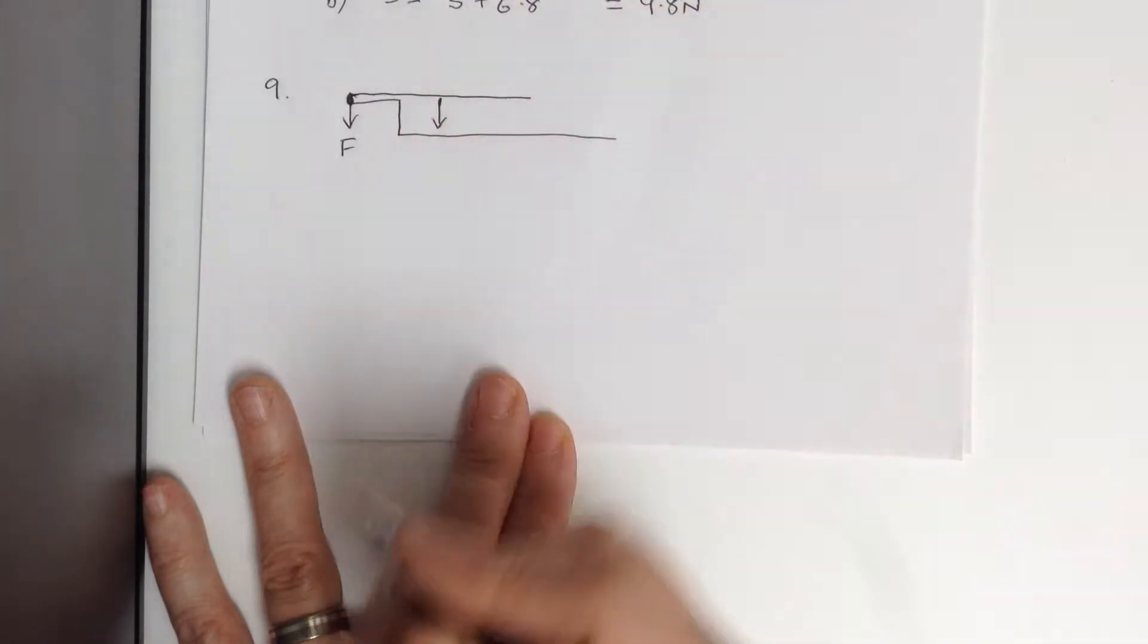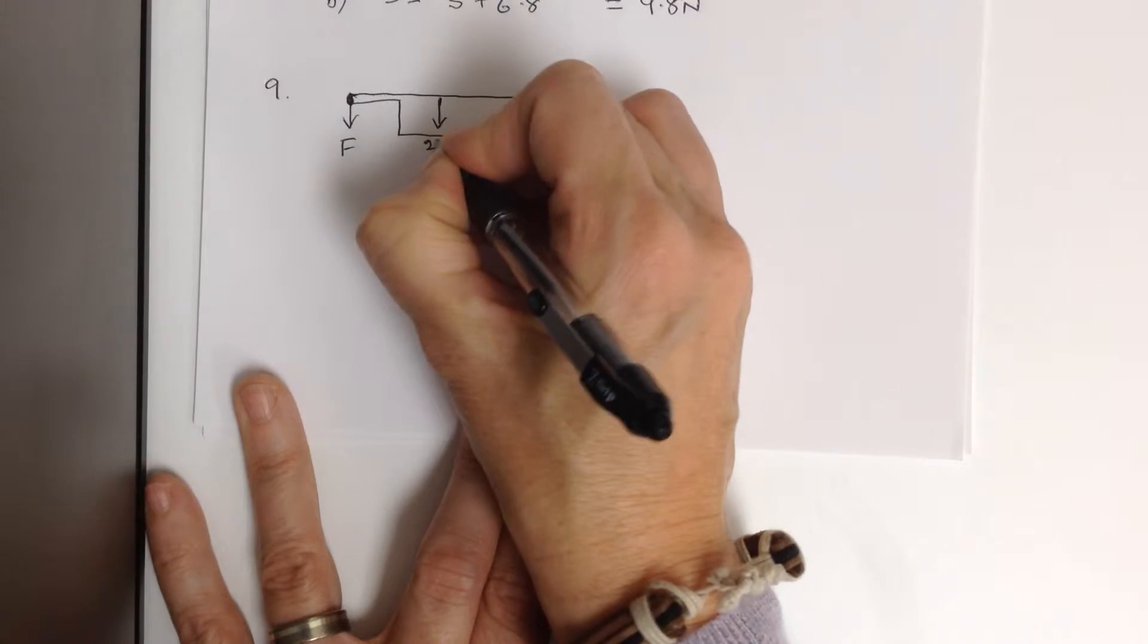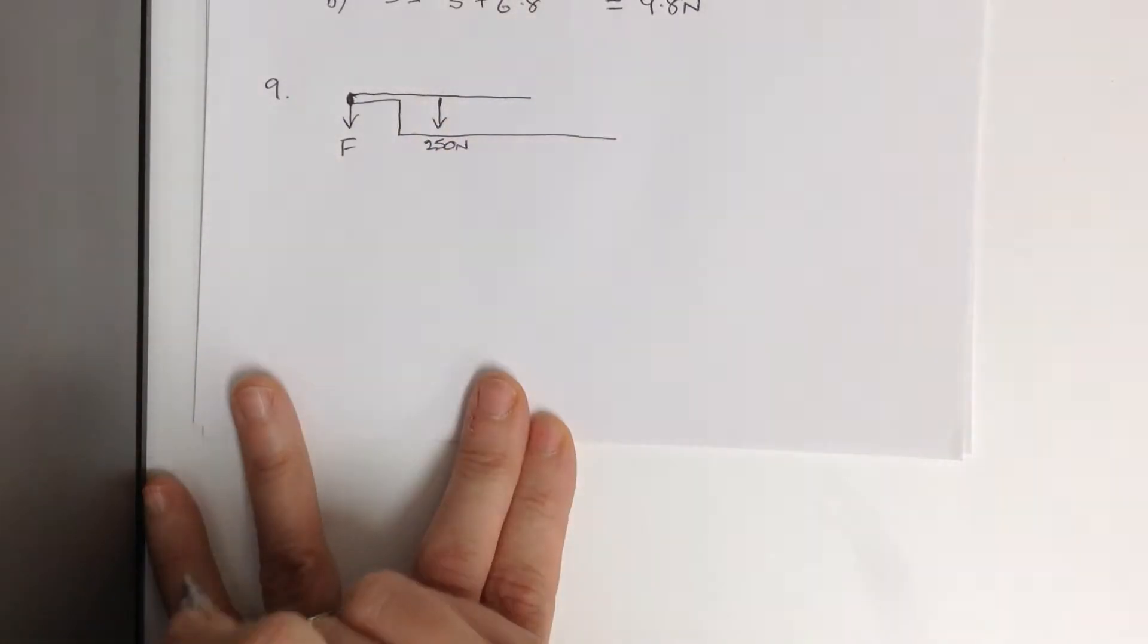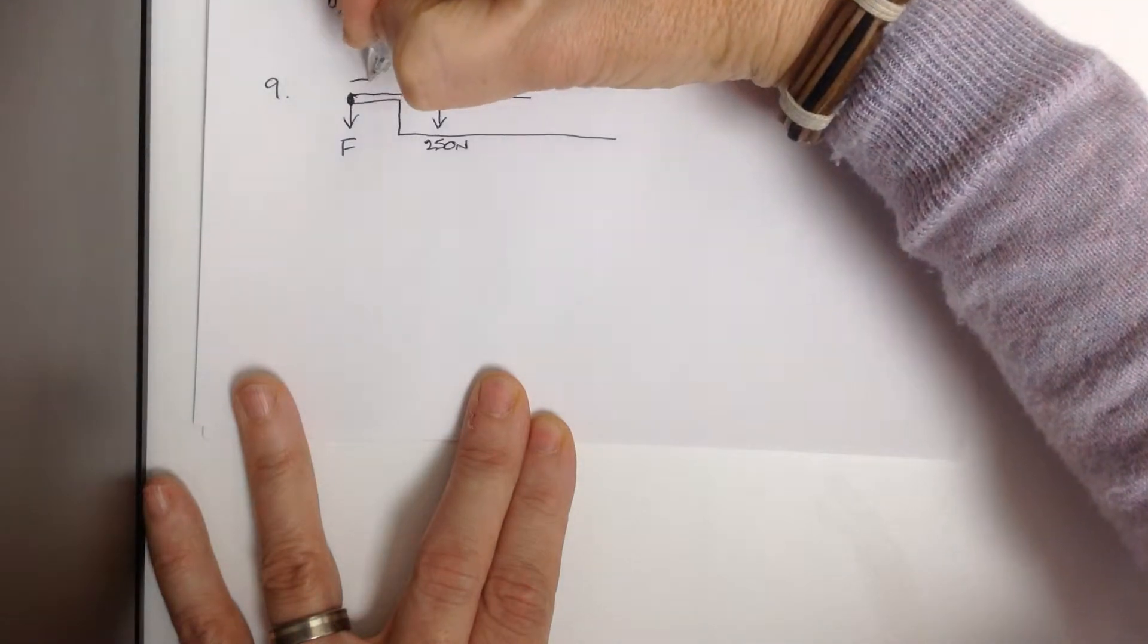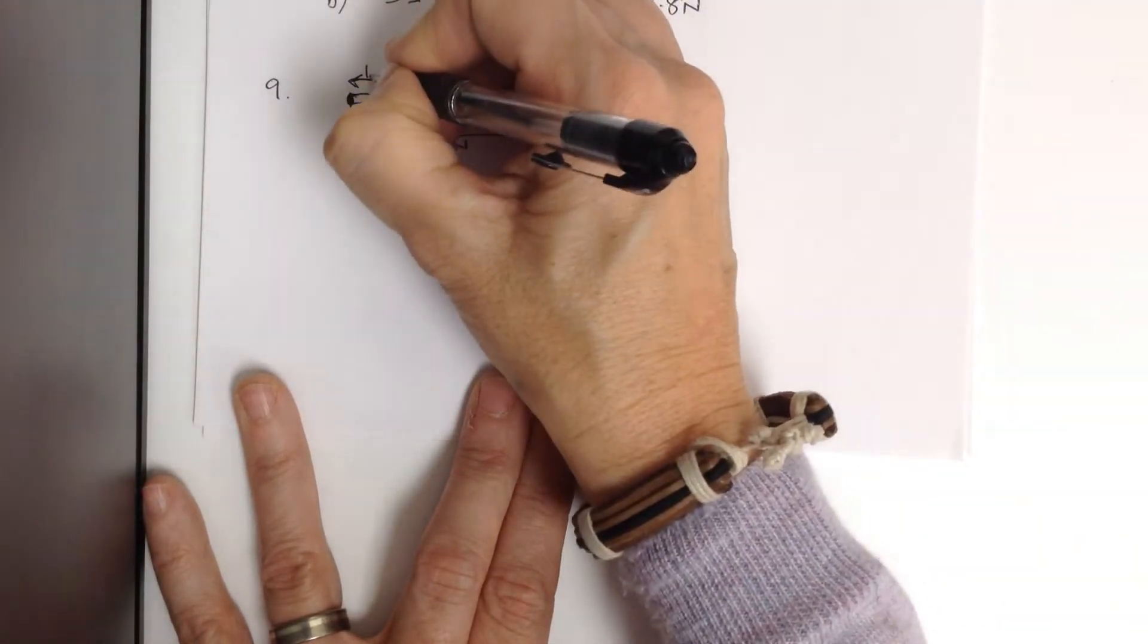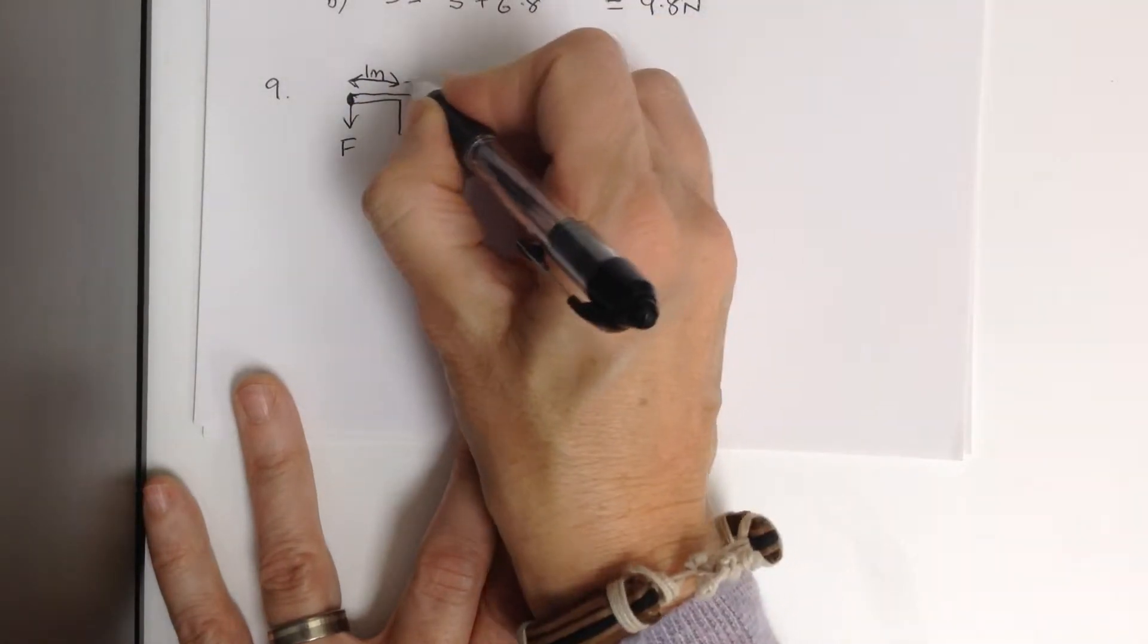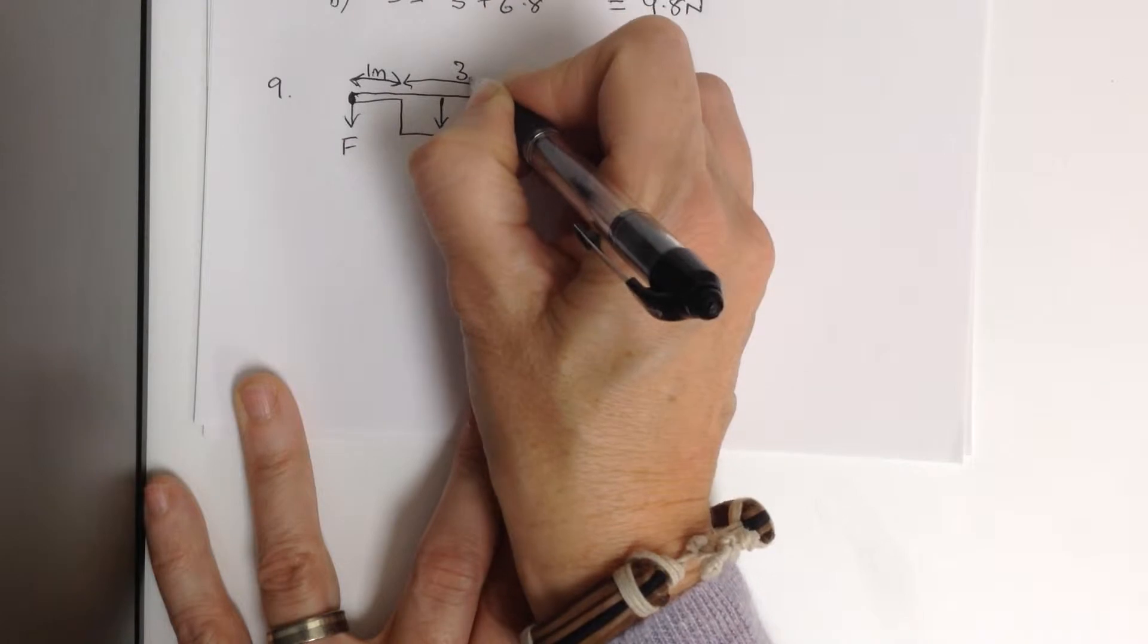It says the board is uniform and has a weight of 250 newtons. It is four metres long, so that would mean, according to the diagram, that is one metre, and that is three metres.